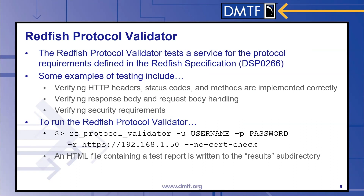To run the Redfish Protocol Validator, you would use the following from the command line: RF protocol validator with your username, password, service address, and no-cert-check. The no-cert-check argument is recommended to bypass self-signed certificate errors that can happen when setting up a connection with a Redfish service. After a few minutes, an HTML file containing a test report is written to the results subdirectory.